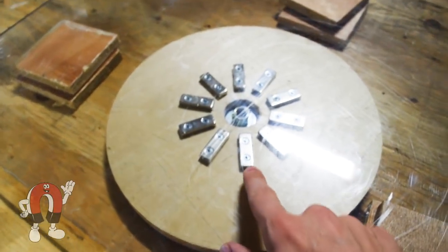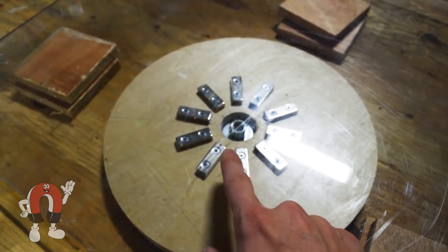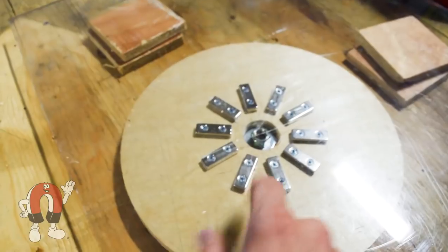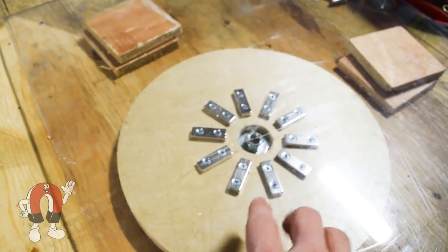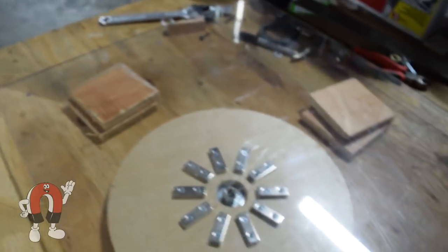And then over here we have the wooden disc with the magnets on top. Now these magnets are alternating poles, so it's north, south, north, south, north, south all the way around, because the change of magnetic field is what is inducing any currents in the aluminum pan.